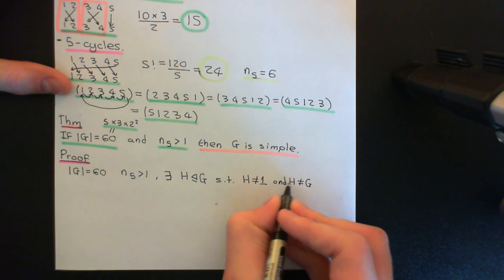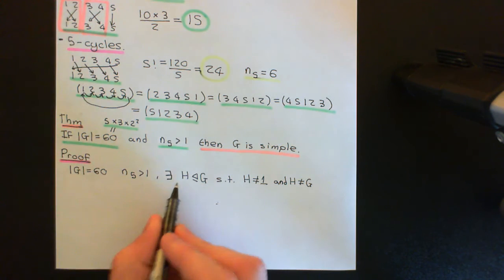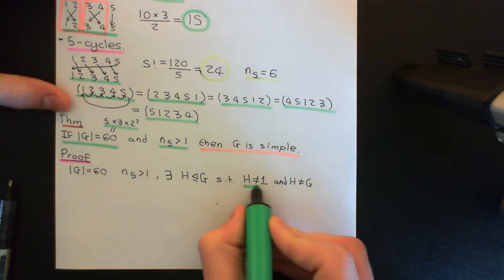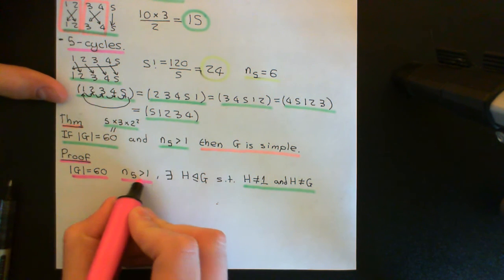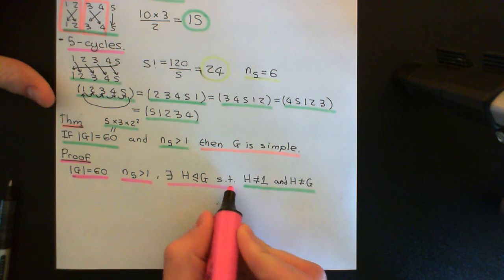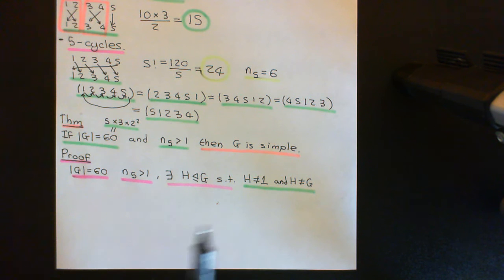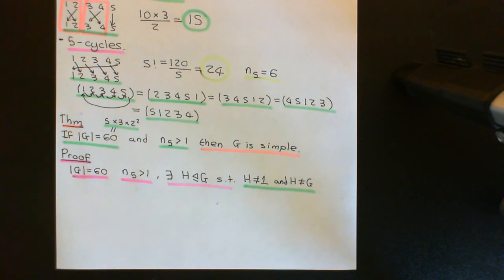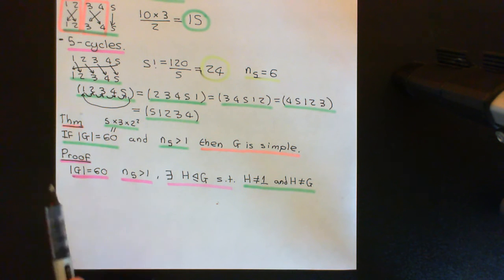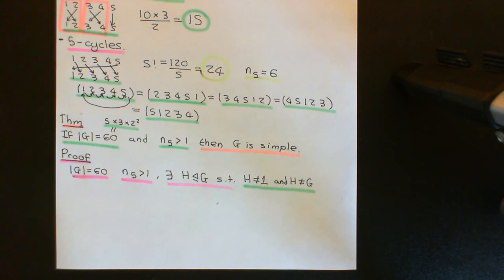So capital H, our normal subgroup, is not equal to the trivial subgroup (denoted 1) and it's not equal to the improper subgroup G. So I'm assuming we've got a group of order 60, the number of Sylow 5-subgroups is greater than 1, and there exists a non-trivial normal subgroup — one that's neither the trivial subgroup nor the improper subgroup. What I now need to do is arrive at some contradiction.